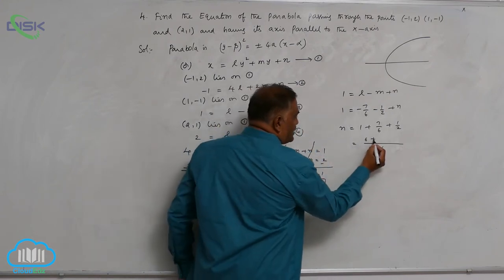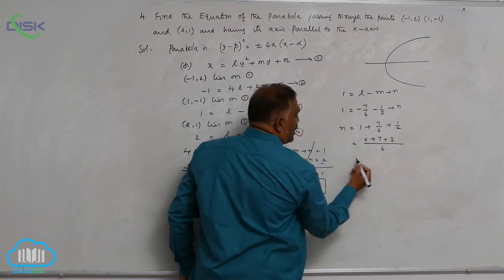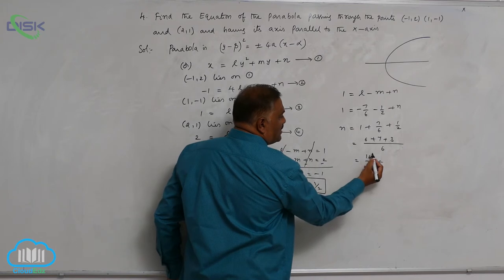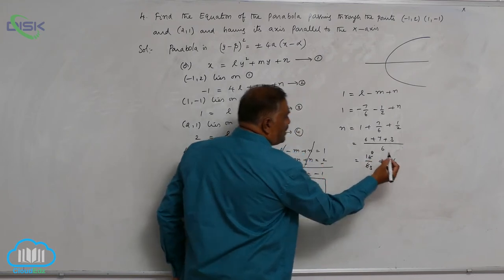This is 6 + 7 + 3. Now, this will become 16/6. That is cancellation with 2, 8 and 3. This is 8/3.